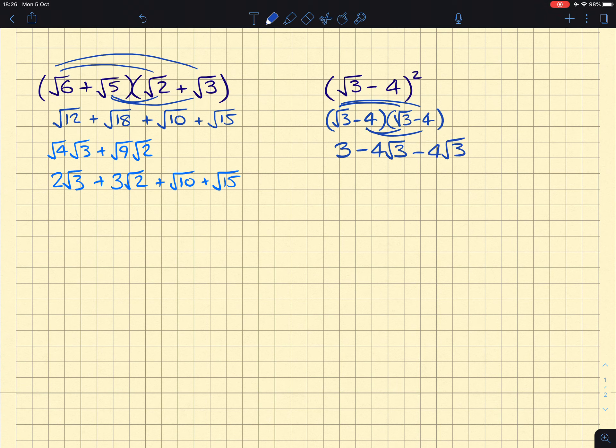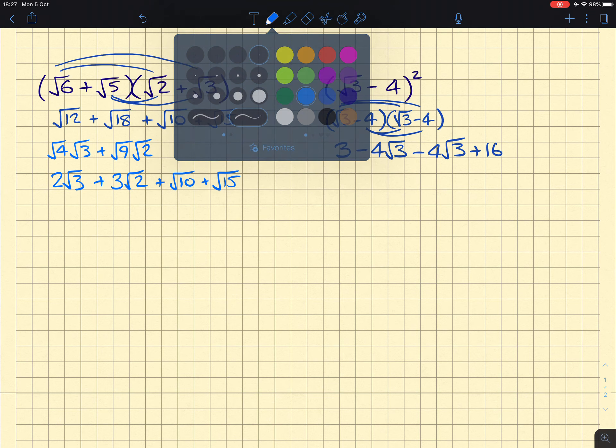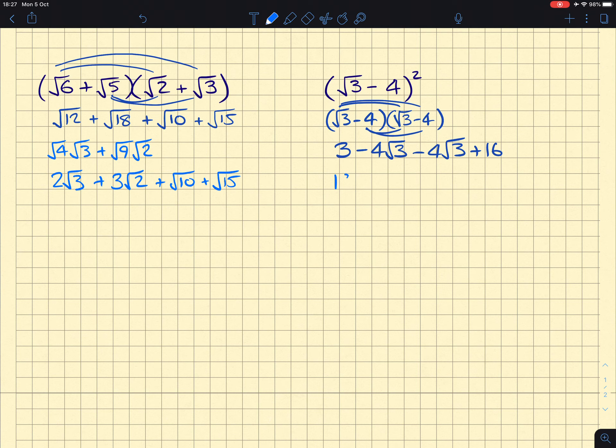And then negative 4 times negative 4 will give us a positive 16. After which, there is some simplifying that can be done here. The 3 and the 16 can both be combined to make 19. And the minus 4 root 3 take away another 4 root 3 is going to get us to have minus 8 root 3. Done.